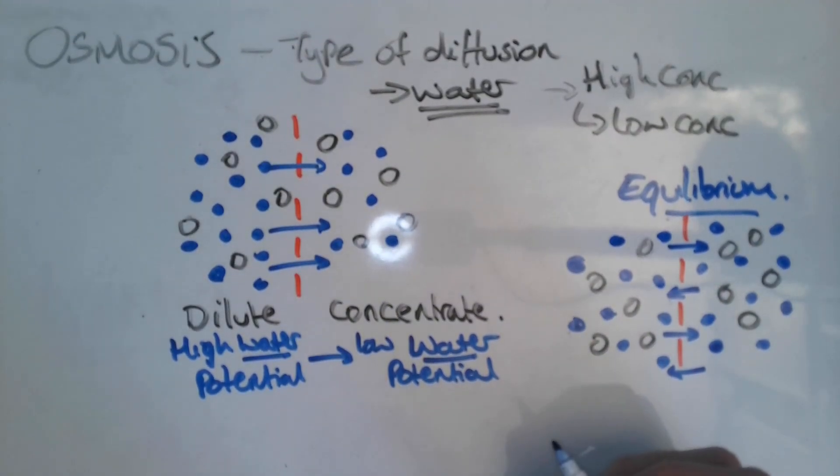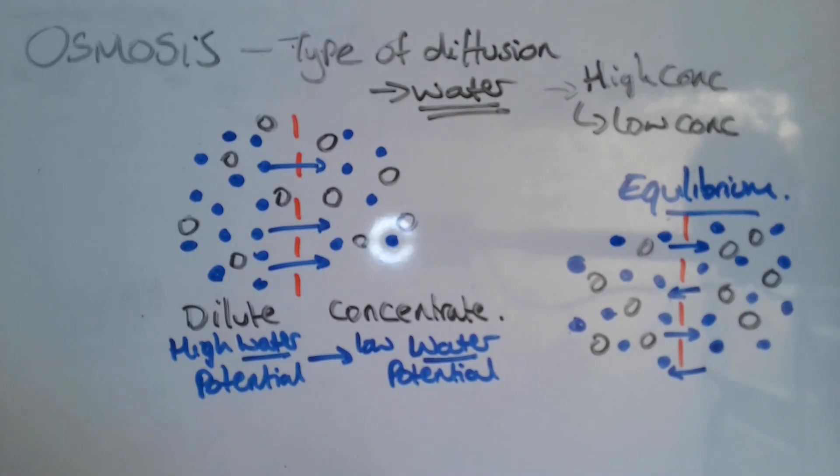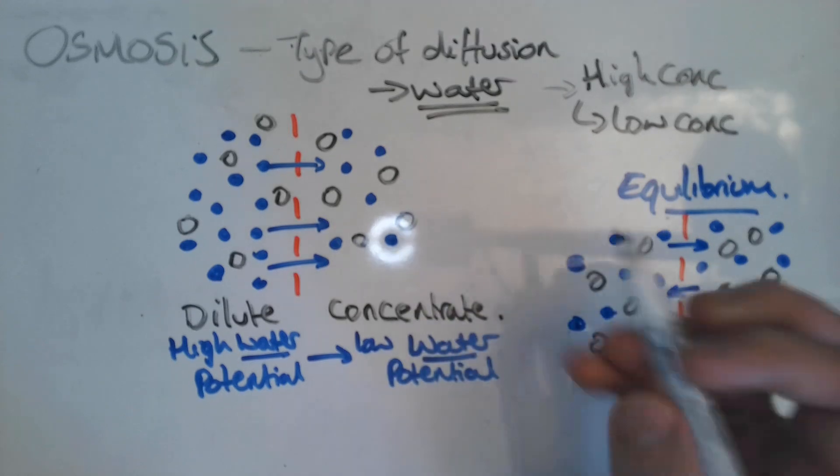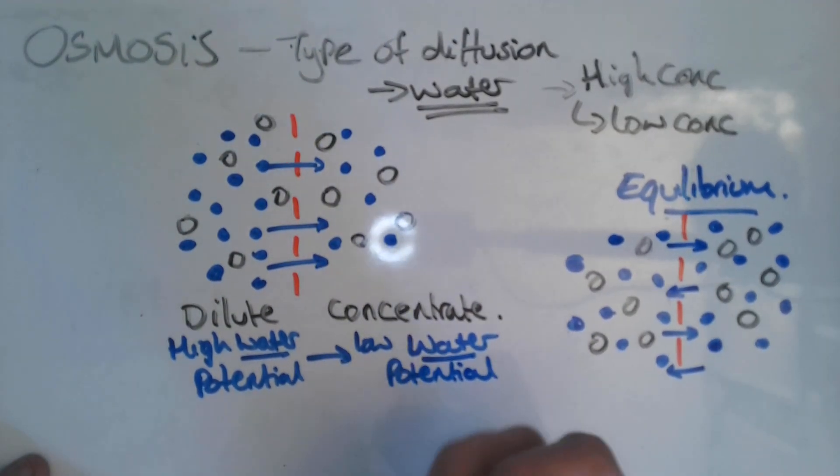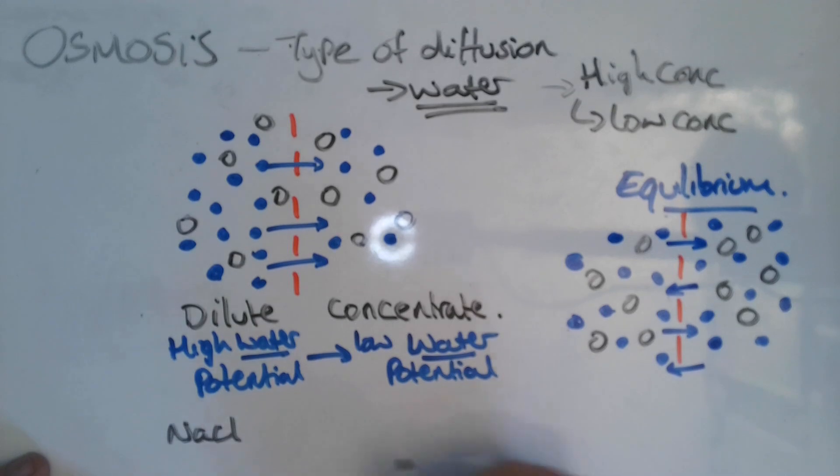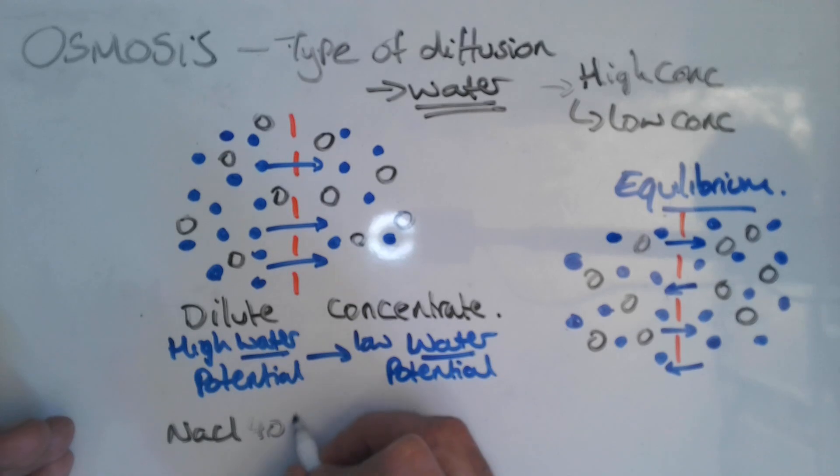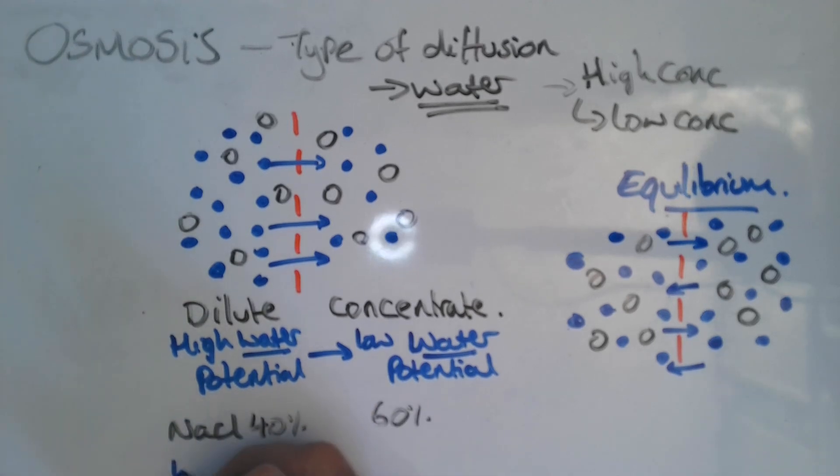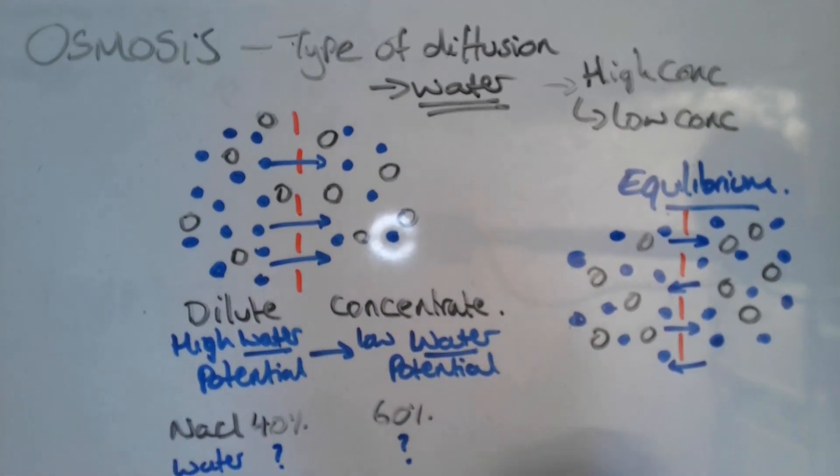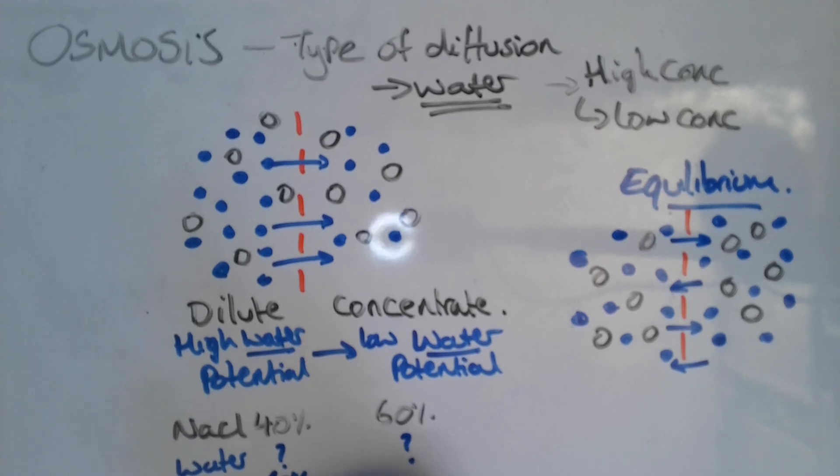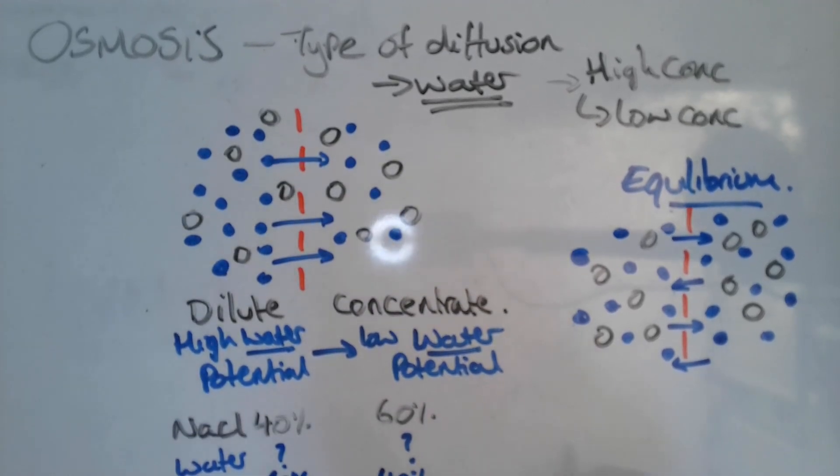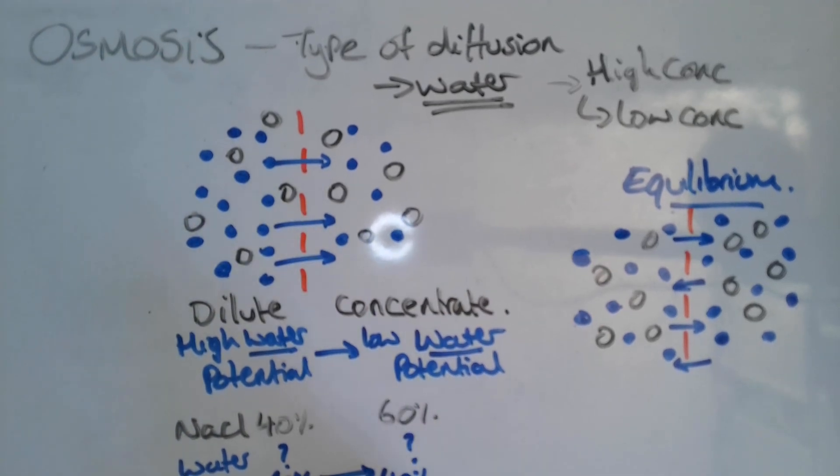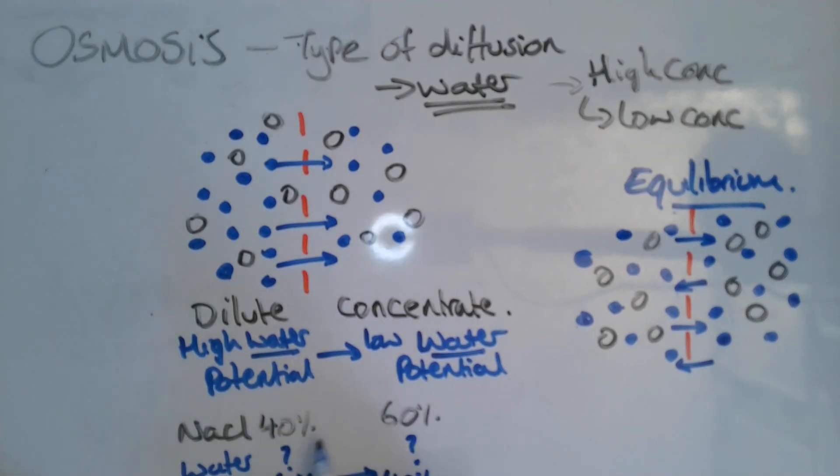Now one little thing to note when talking about this in context of an exam is often they'll talk about the concentration of the solutes and not the water. So they might say that the solute, let's say sodium chloride, salt water for example, would have a certain percentage on one side and a certain percentage on the other. So let's say 40% on one side, 60% on the other. And what you would need to do is then work out what the water would be on either side. So in this case it would be 60% water and 40% water on that side, and therefore which direction the water would move, which would be from the higher water to the lower water. Quite often in an exam people get this confused because they'll talk about the solute and not the water.